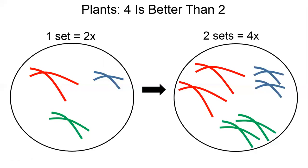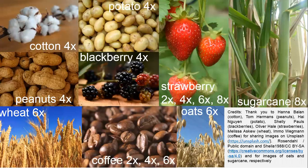For animals and humans, this is really bad news. But for plants, this is great news, because doubling instruction sets means bigger plants and bigger fruits. Indeed, most of the crops that we use today have two, four, six or eight times the original set of instruction booklets. For instance, cotton, peanuts, blackberries and potatoes have 4x — they're called tetraploid. Different species of coffee and strawberries have two, four, six or up to eight x. Wheat and oats as hexaploid have 6x, and sugar cane is 8x, octaploid.